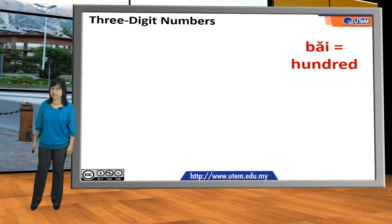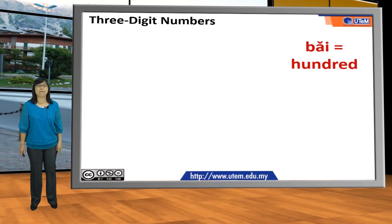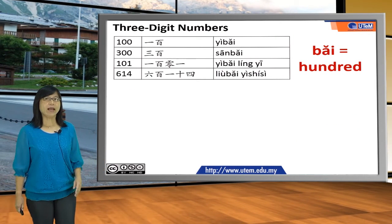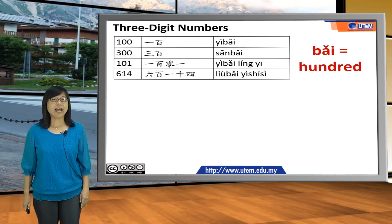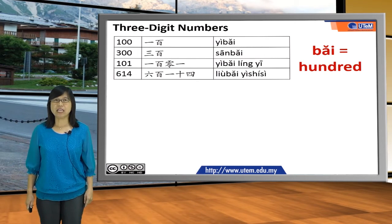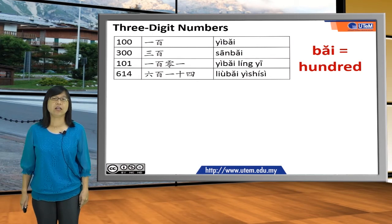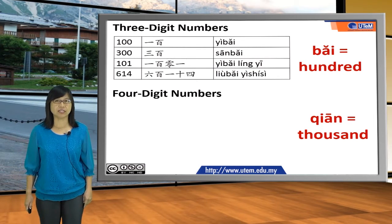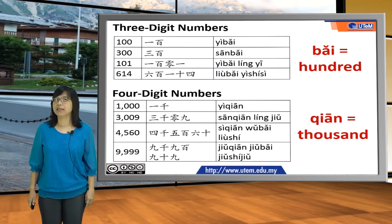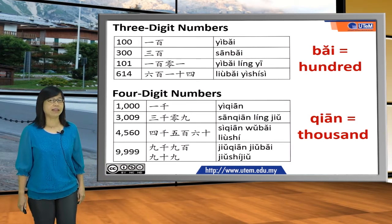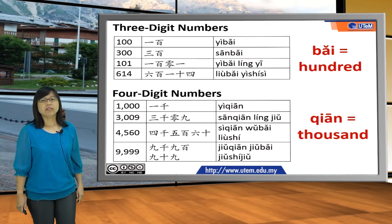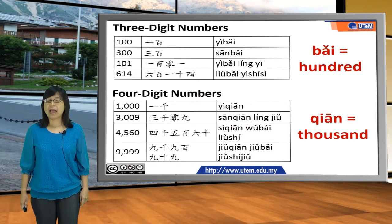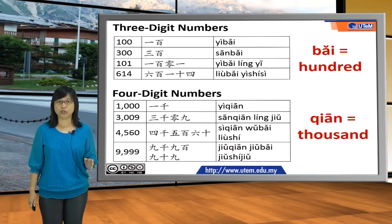Now we go to three-digit numbers. The basic word for a three-digit number is 百, which means 100. One hundred is 一百, three hundred is 三百, one hundred and one is 一百零一, and six hundred and fourteen is 六百一十四. For four-digit numbers, the basic word is 千, which means thousand. One thousand is 一千, three thousand and nine is 三千零九, four thousand five hundred and sixty is 四千五百六十, and nine thousand nine hundred and ninety-nine is 九千九百九十九.